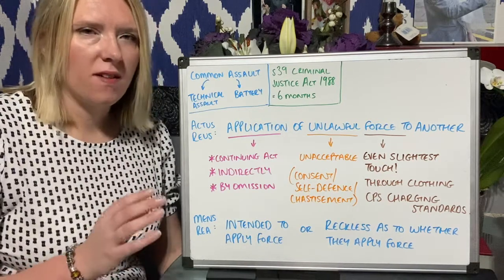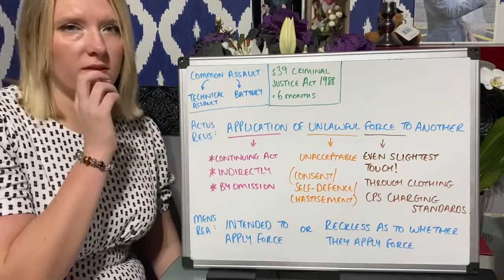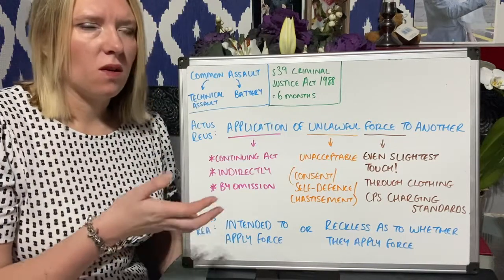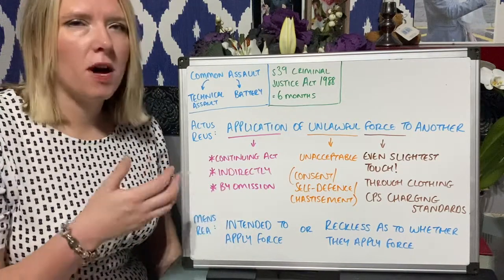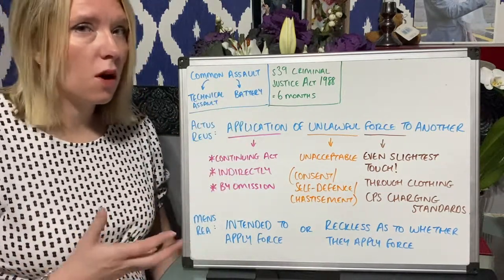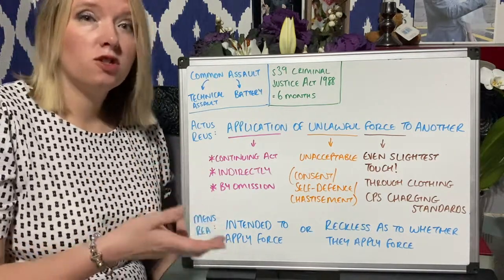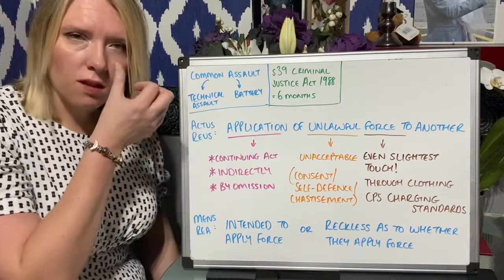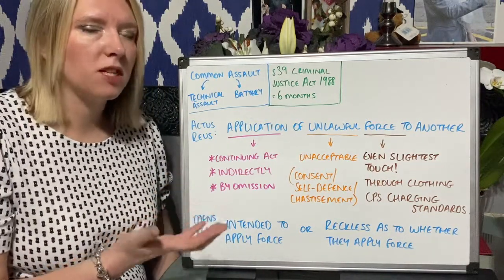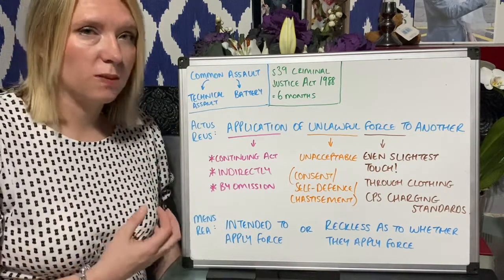So last week you looked at the offence of assault. Assault and battery make up an offence called common assault. Where you tend to read in the news or hear about on TV where a person has been assaulted, the media tends to refer to the broad term of common assault. But common assault is actually an umbrella offence which contains two: a technical assault where the defendant acts in a way that makes the victim apprehend immediate unlawful force, and then the actual application of unlawful force, which is battery.